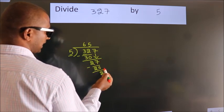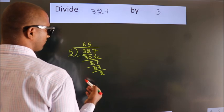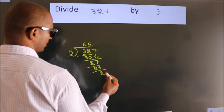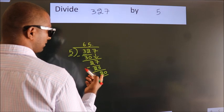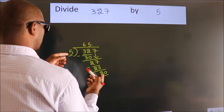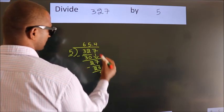After this, no more numbers to bring down. So what we do is put a dot and take 0, giving us 20. When do we get 20 in the 5 table? 5 times 4 is 20.